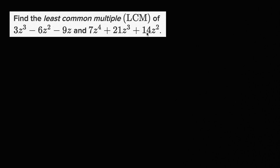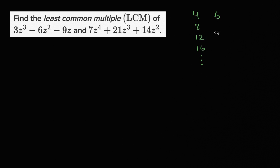If you're familiar with the least common multiple of two numbers, one way to think about it is to list all the multiples and see which one is least. For example, with 4 and 6: the multiples of 4 are 4, 8, 12, 16, and so on. The multiples of 6 are 6, 12, 18, 24, and so on. They have multiple common multiples, but the least of them is 12.